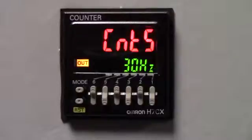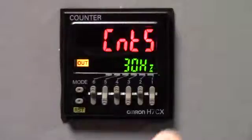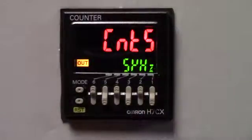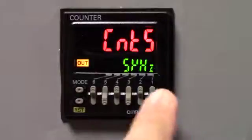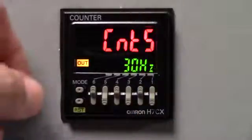You're going to see CNTS. This is the counting speed. There's two speeds to choose from. There's 30 hertz. By pressing the number one key, that will change us over to the 5 kilohertz. Seeing how we're going to be using a push button for our input, we can use the 30 hertz. So, we're going to press the mode key.